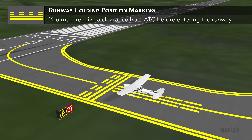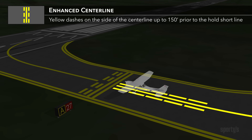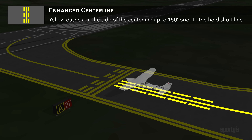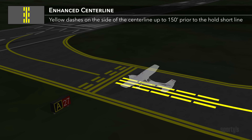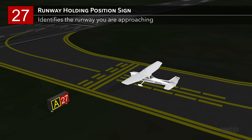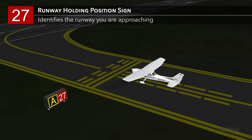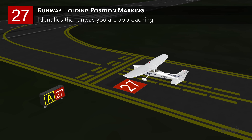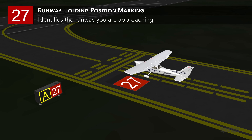You must receive a clearance from ATC before crossing the solid lines to cross or enter the runway. At many airports, you'll also find an enhanced center line leading up to the hold short line, designed to get your attention that an active runway is up ahead. This consists of yellow dashes on either side of the normal taxiway center line for a maximum of 150 feet prior to a runway holding position marking. To the left of the hold short line will be a red runway holding position sign. When at the end of the runway, this sign will display just the one runway number that you're approaching. In this example, we are positioned at the start of runway 27. You may also see a supplemental painted version of the red runway hold short sign on the pavement directly in front of the hold short line, displaying the same runway number identification.